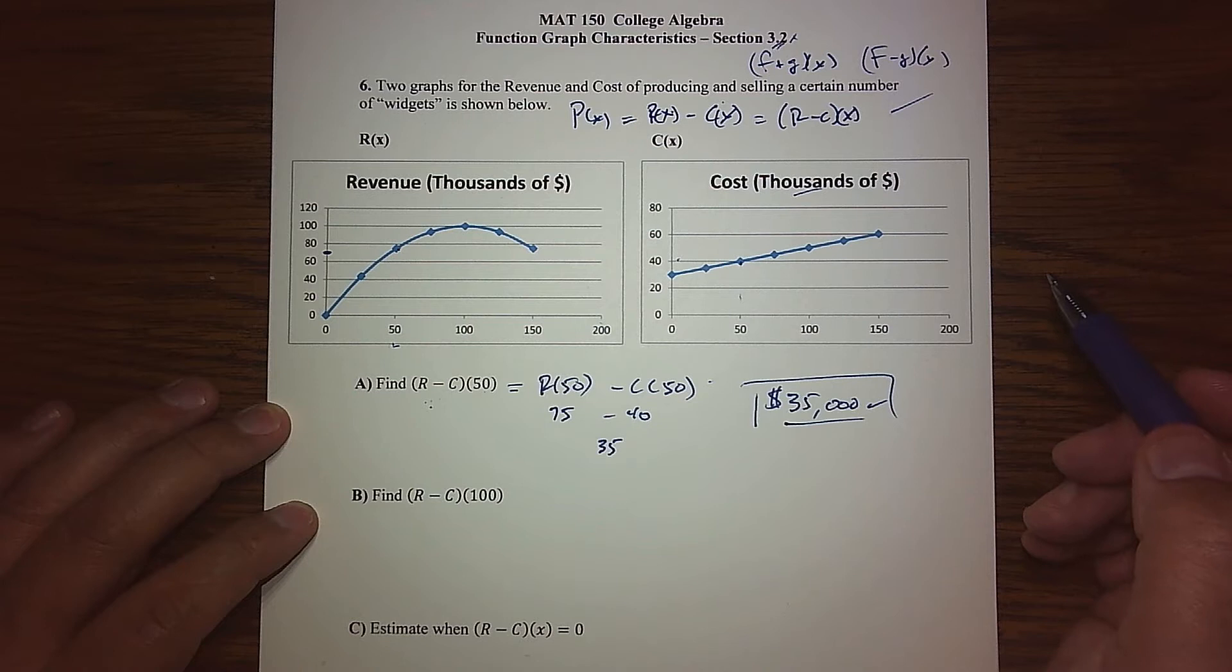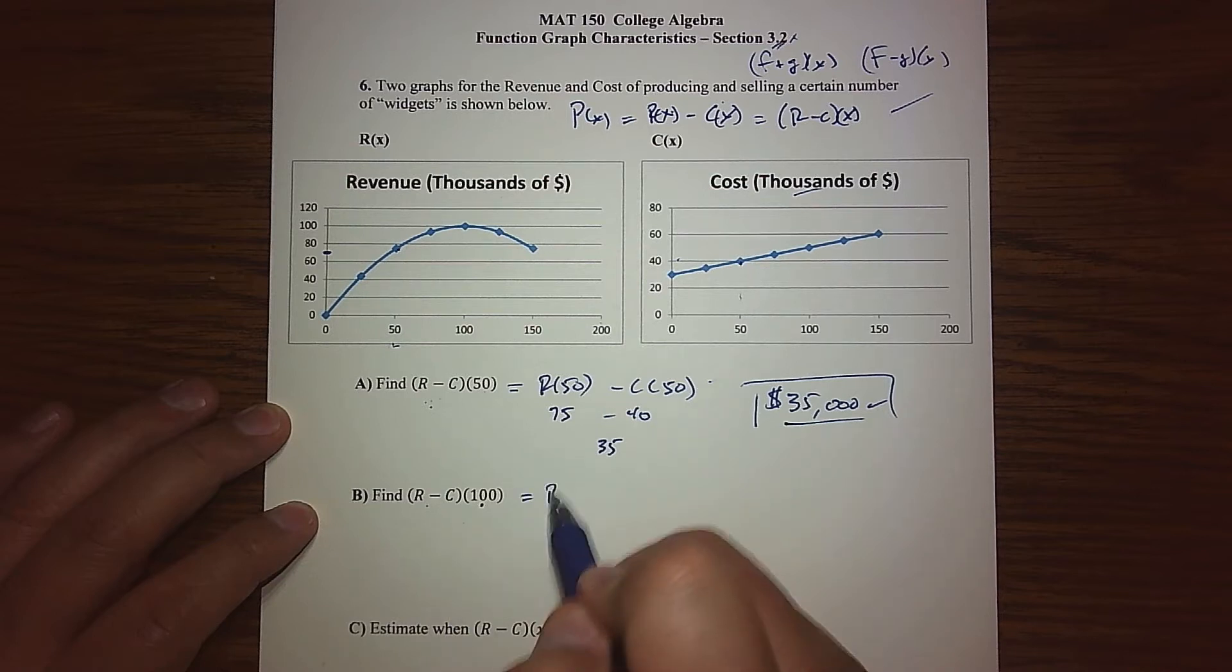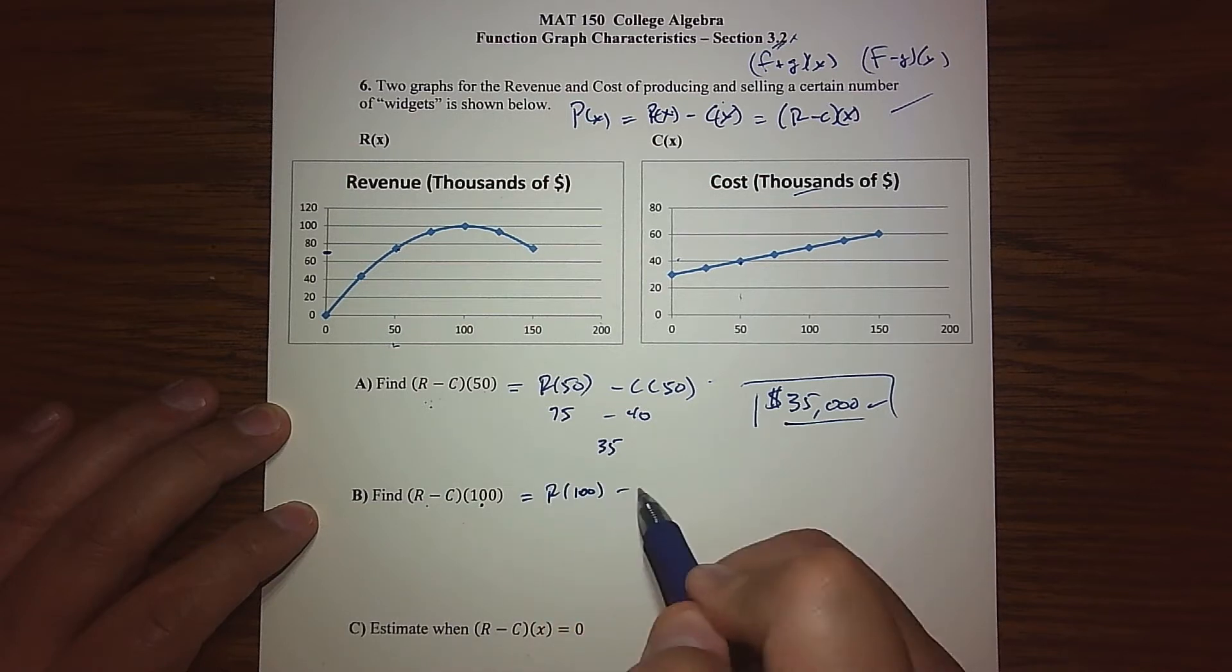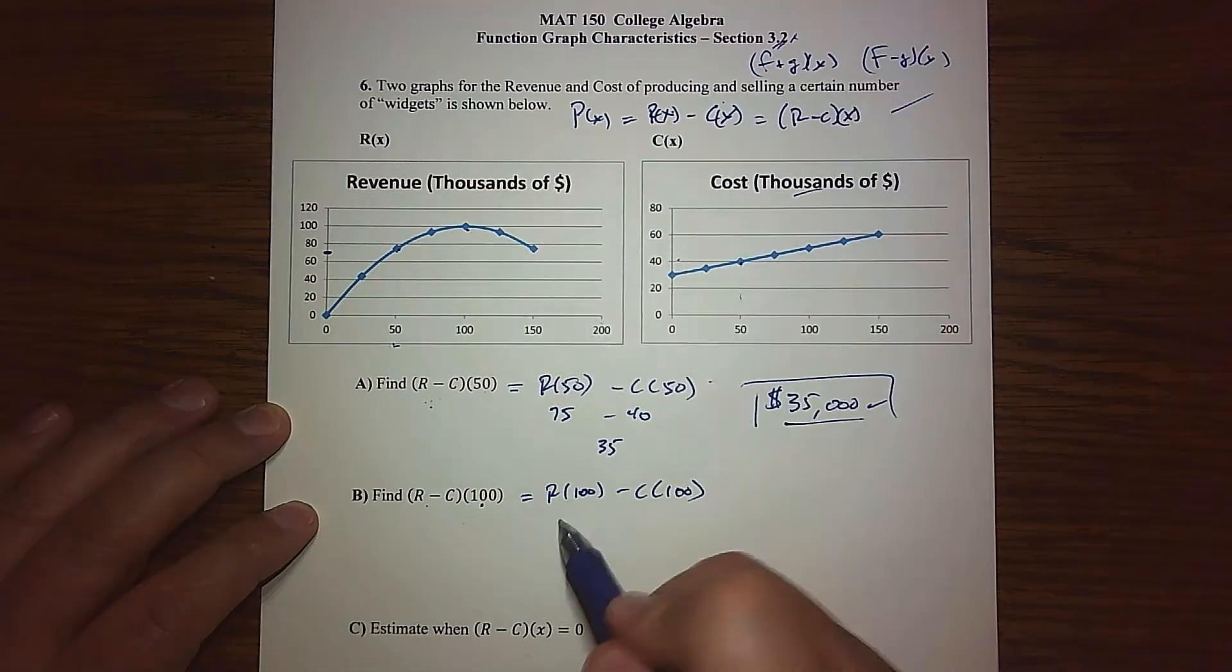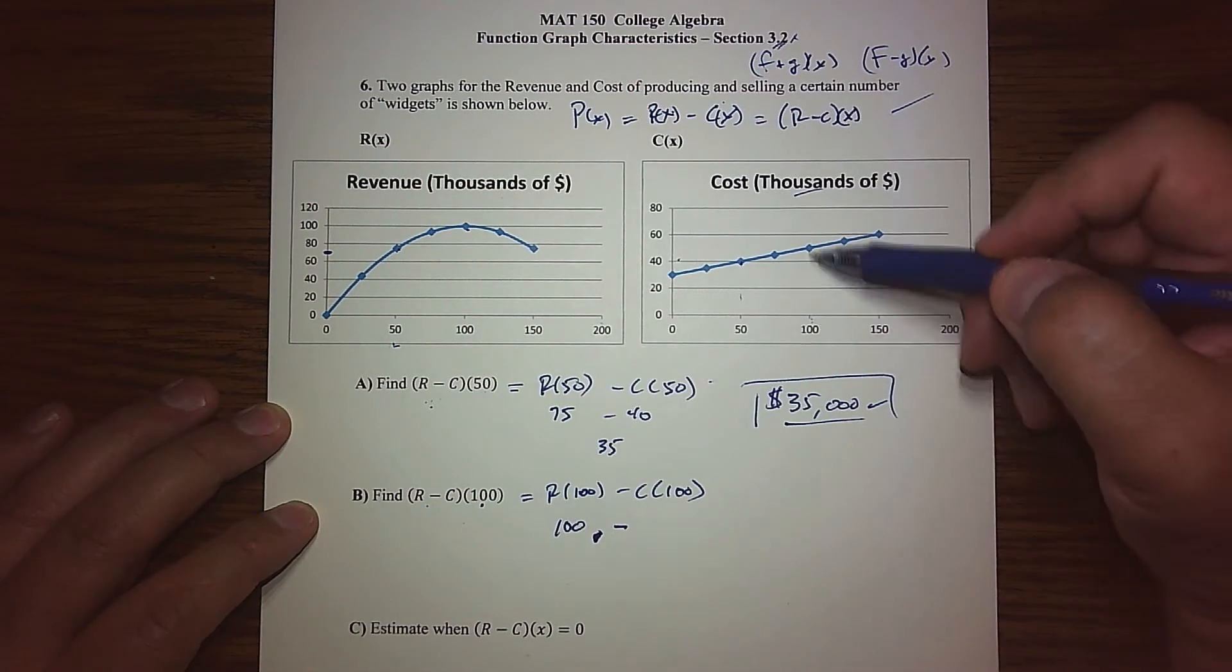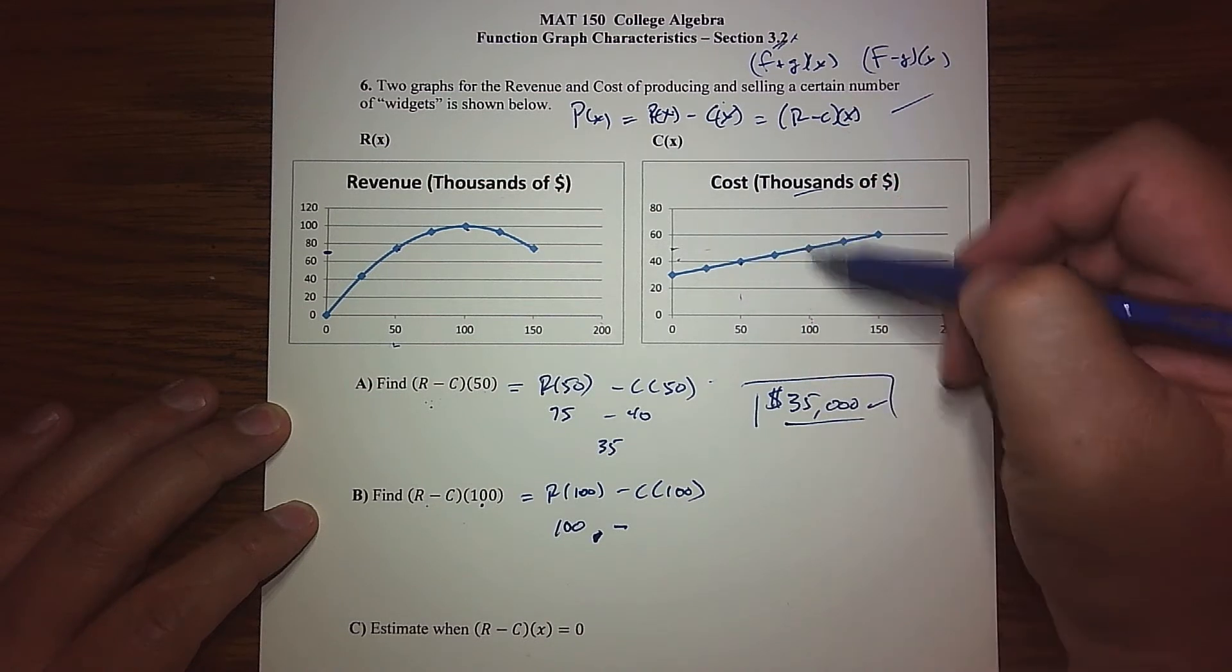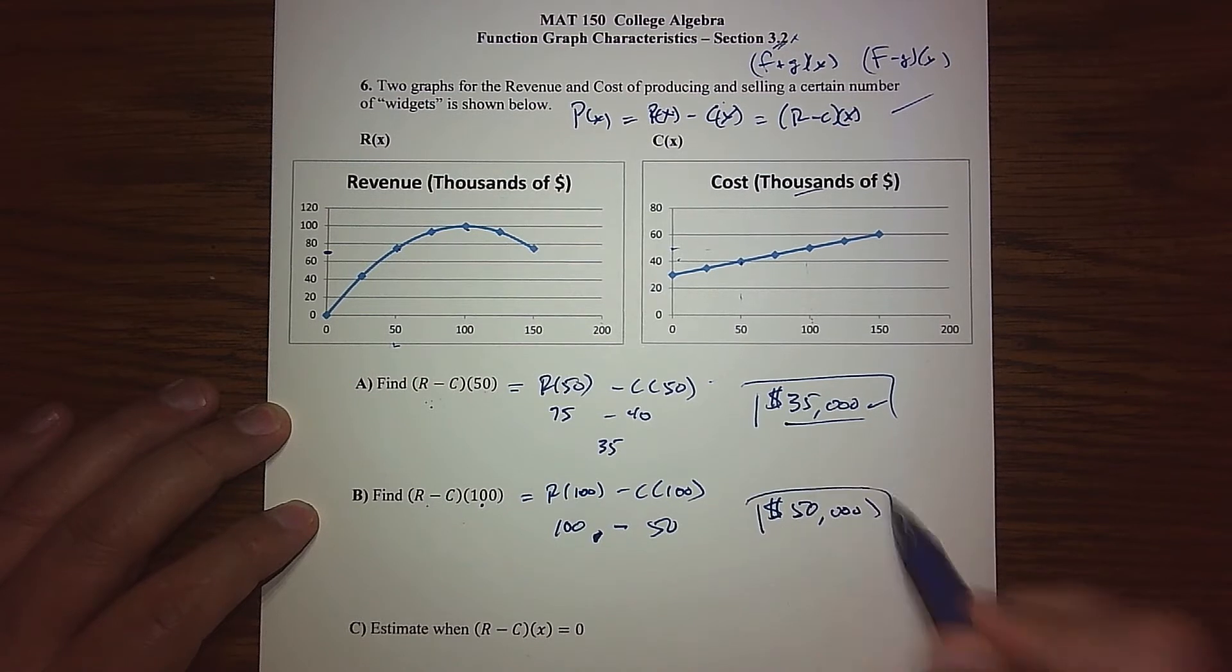What about R minus C of 100? What's my profit function when my number of widgets is 100? Again, we'll find R(100) minus C(100) and then just read the graph. R(100) looks like it is 100, minus C(100), which looks like about 50.